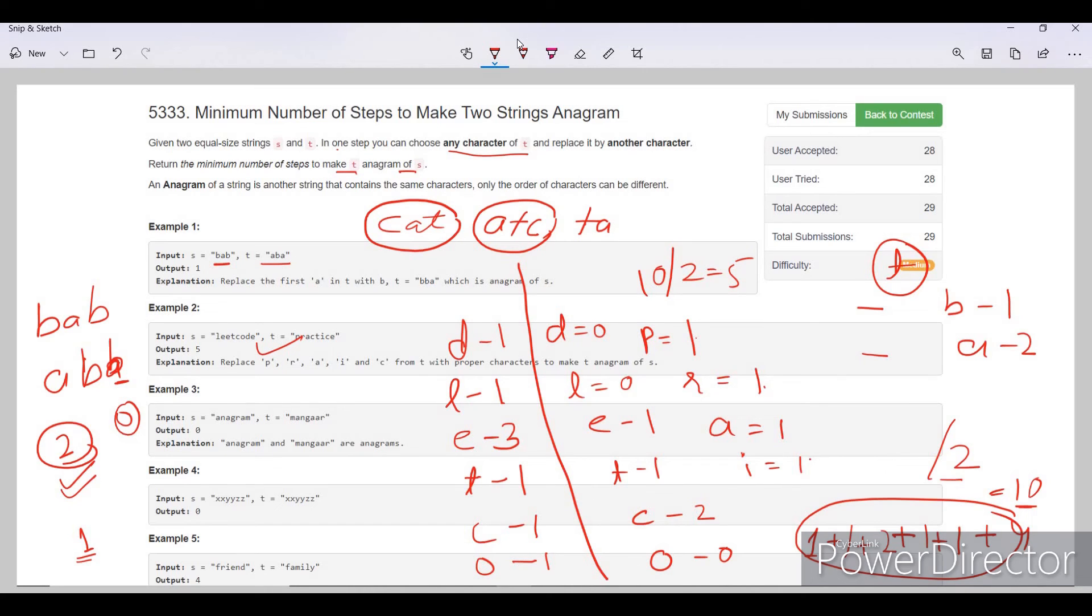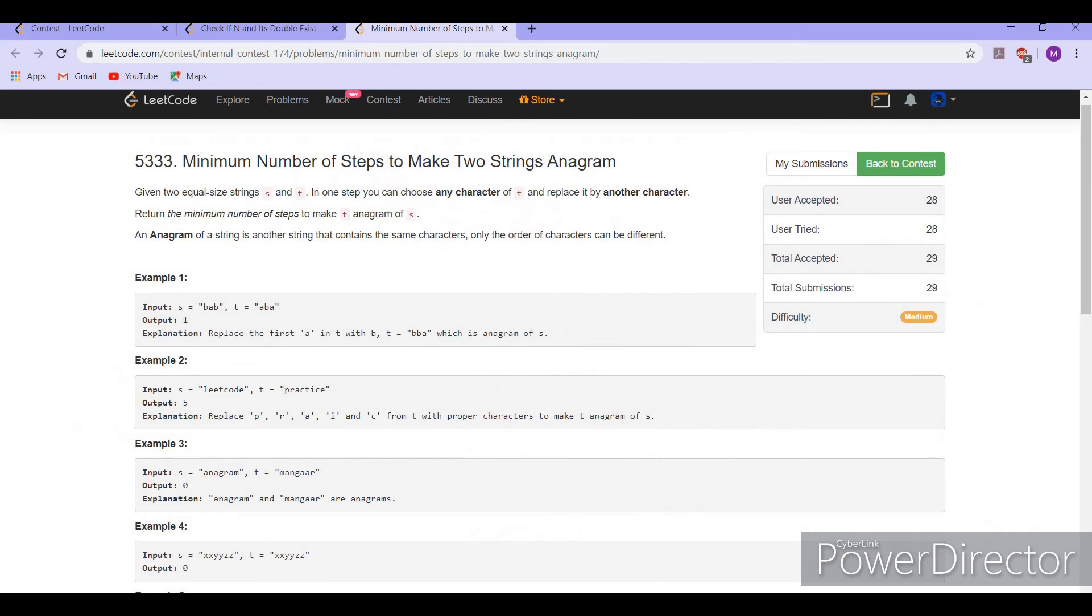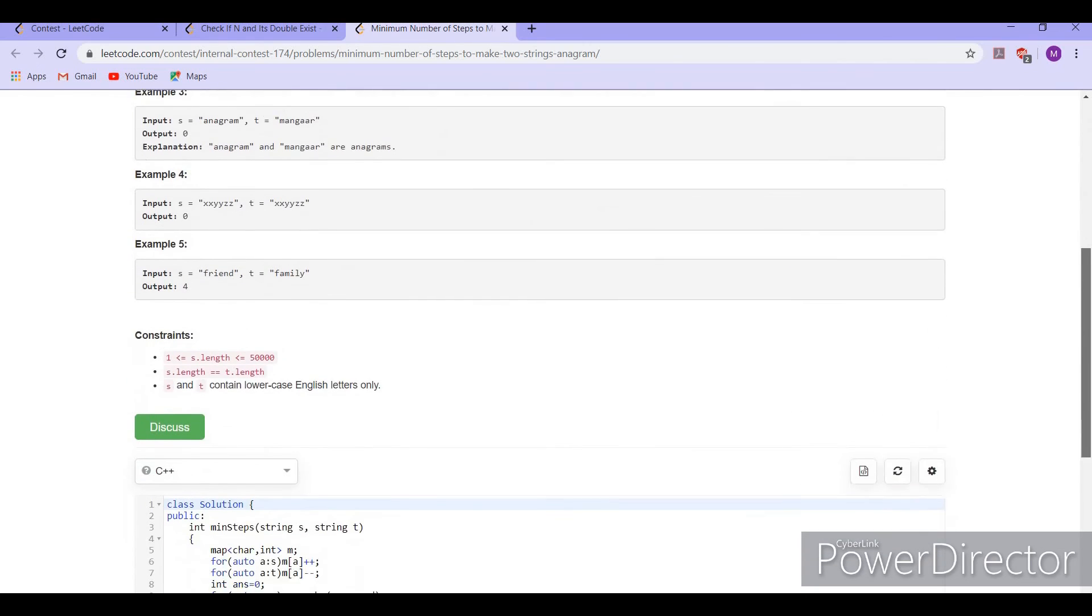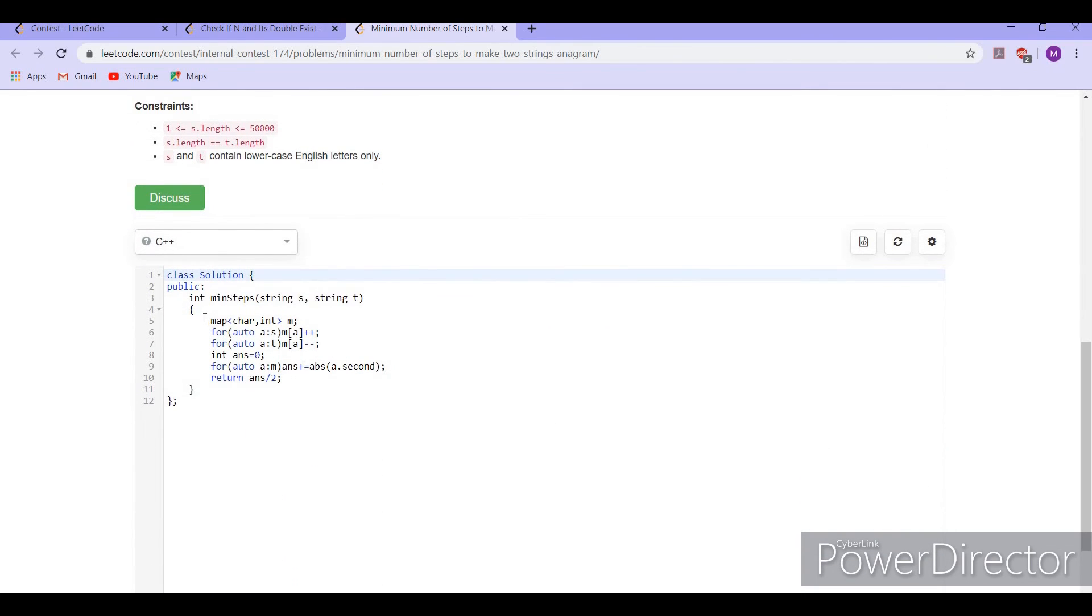Similarly, we can keep a map and then calculate the total difference and then return the total difference divided by 2 as the answer. So if we look at the code, this is the code. Here we have implemented this using a map. We could have done this using an unordered map also.